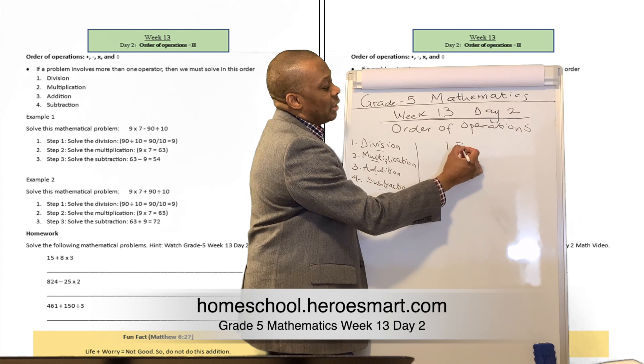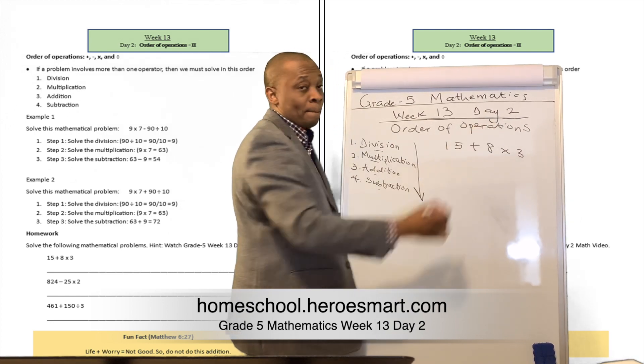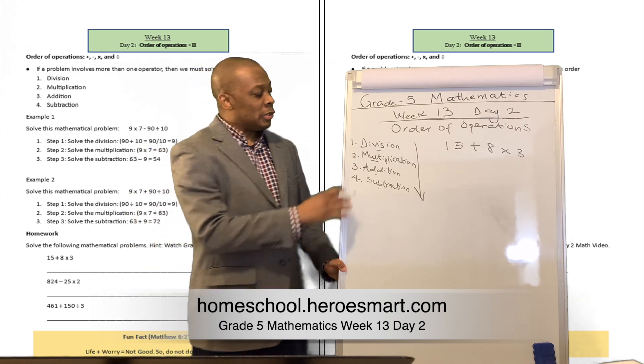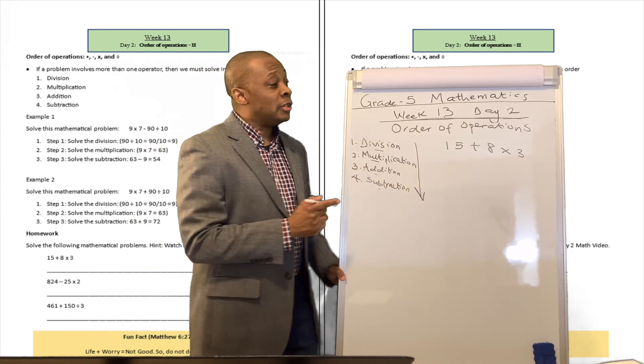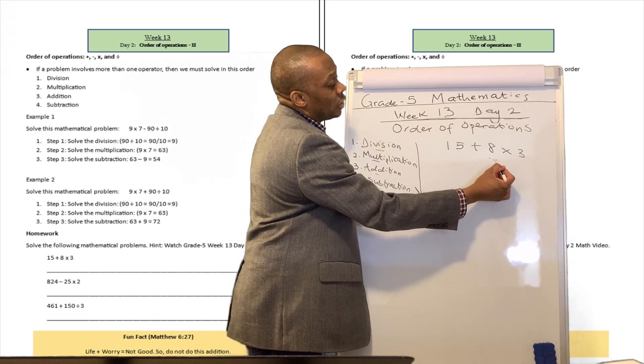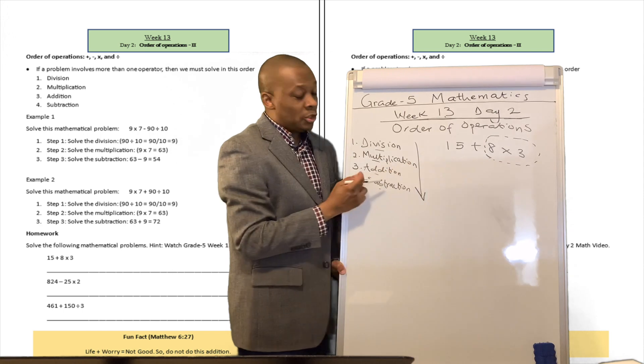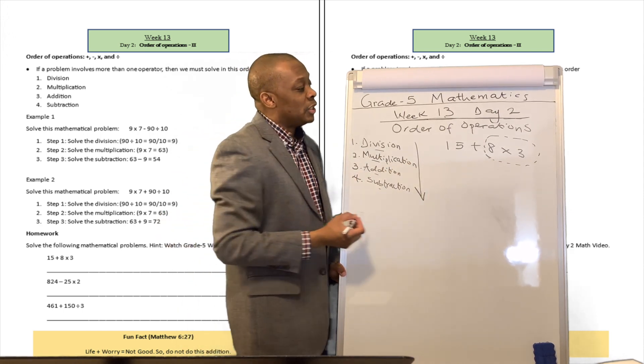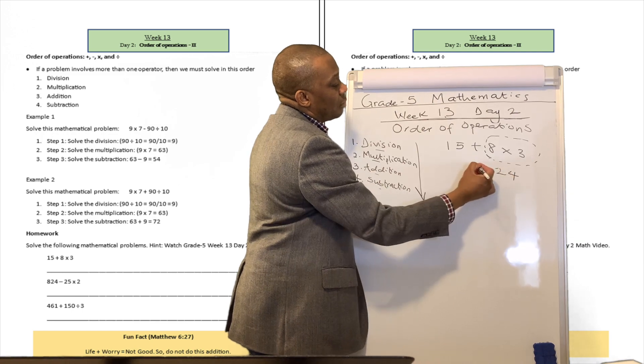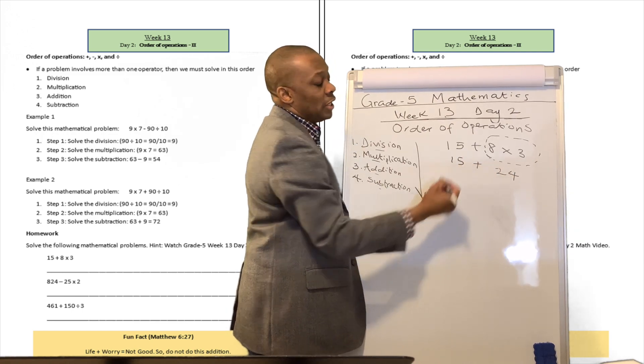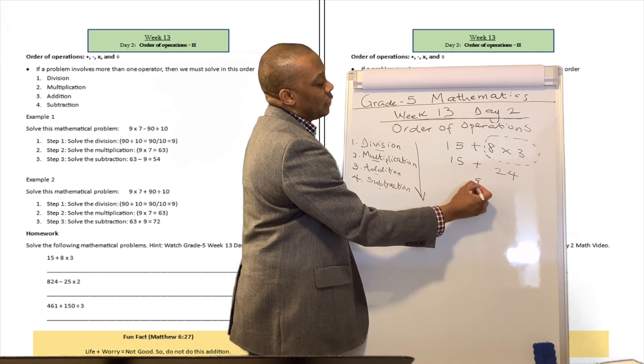So let's say we have a number like this: 15 plus 8 multiplied by 3. Well, there is no division here, but there's multiplication and addition. We've got to solve the multiplication aspect firstly, before we do the addition. So we're going to say, what is 8 times 3? That's going to be 24 plus 15, and then 24 plus 15 is going to be equivalent to 39.